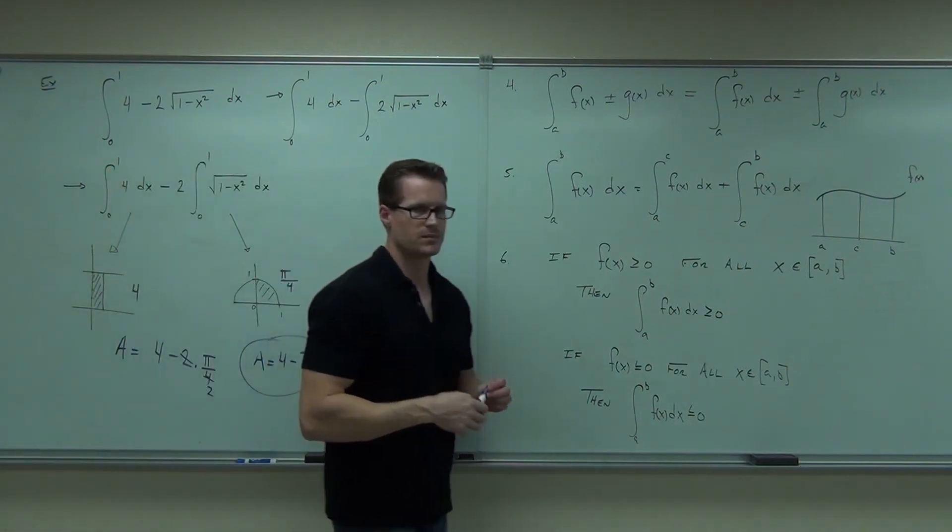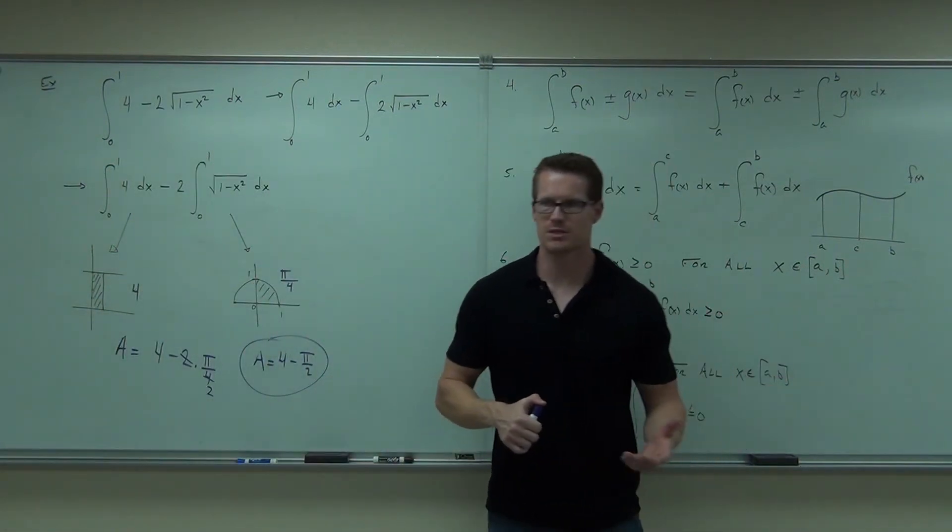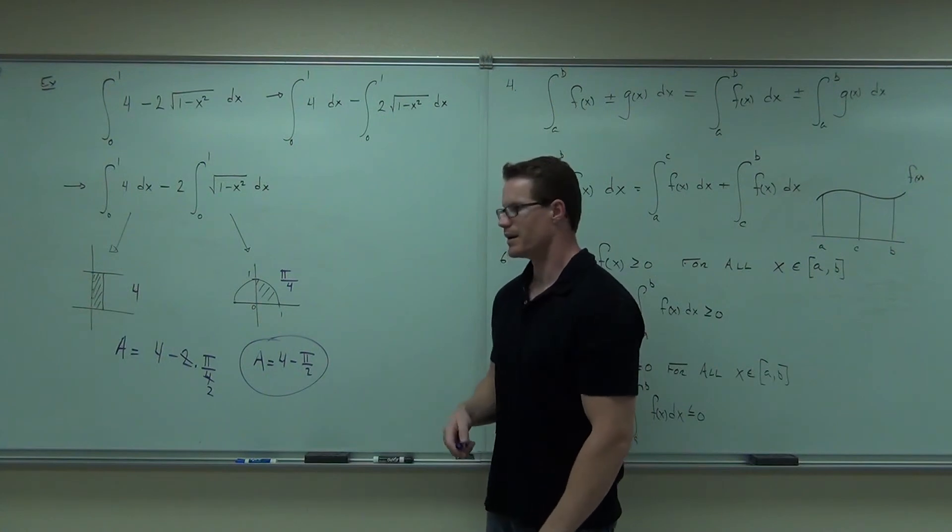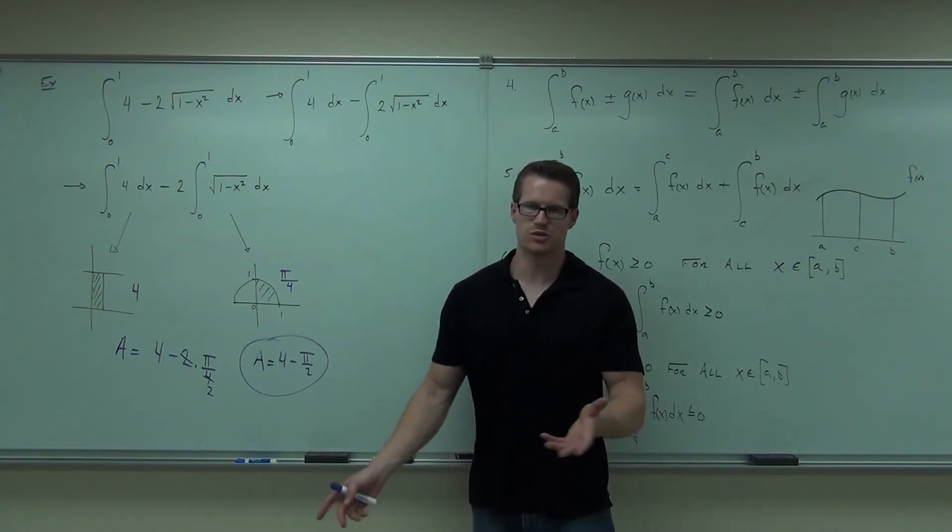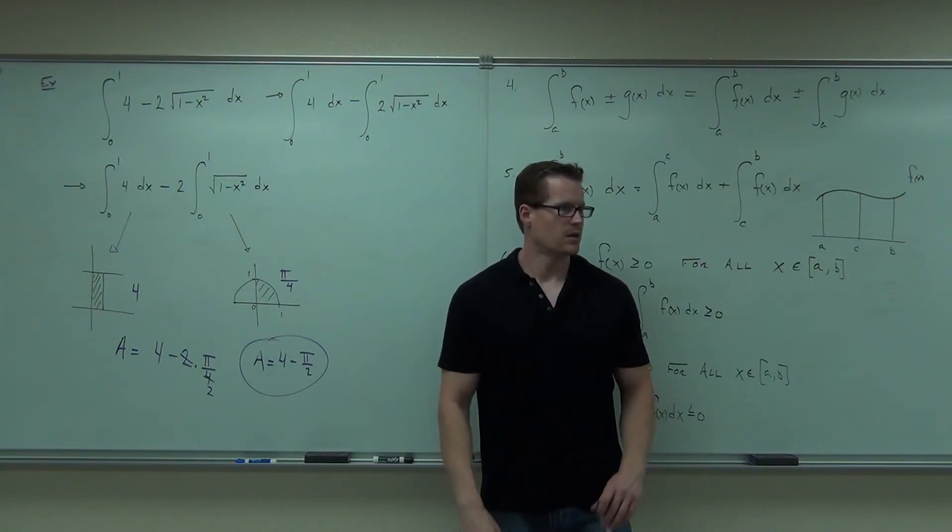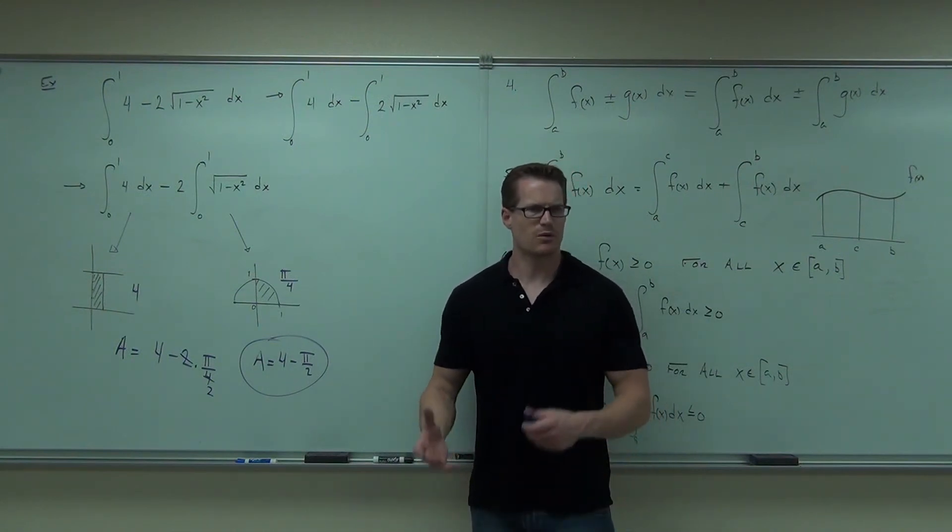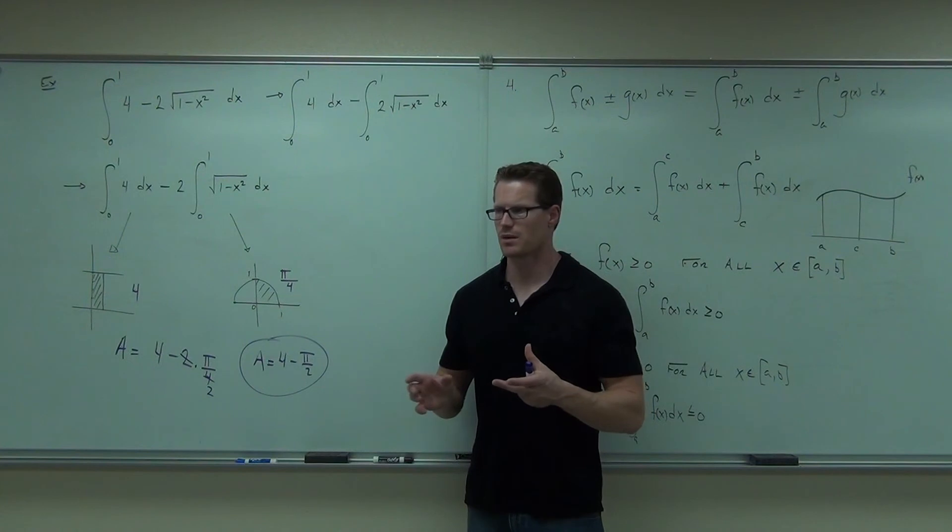Area is 4 minus pi over 2. If you really want to find a common denominator and do that, I think you'd get 8 minus pi over 2 if you really want. It doesn't do you any good to do that, but you could if you want to. Do you feel okay with breaking these things up and using some geometry?